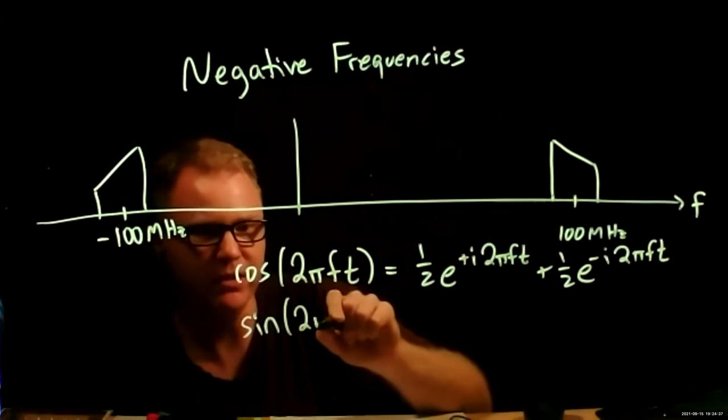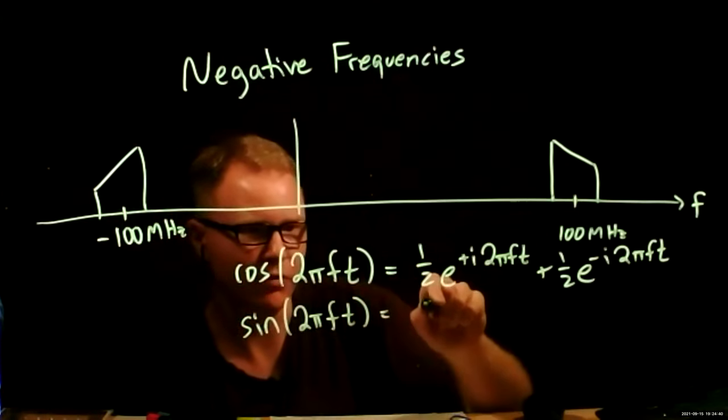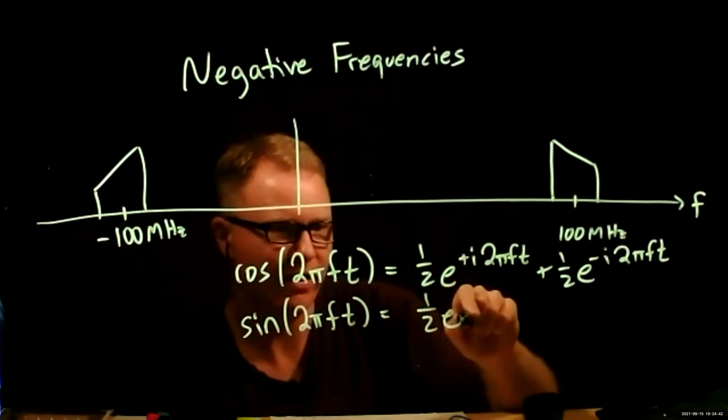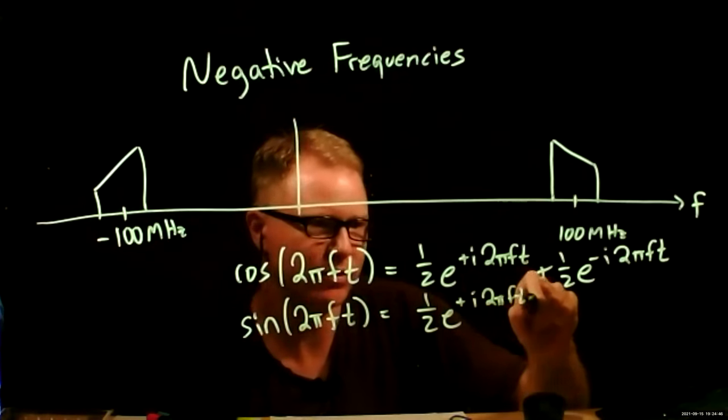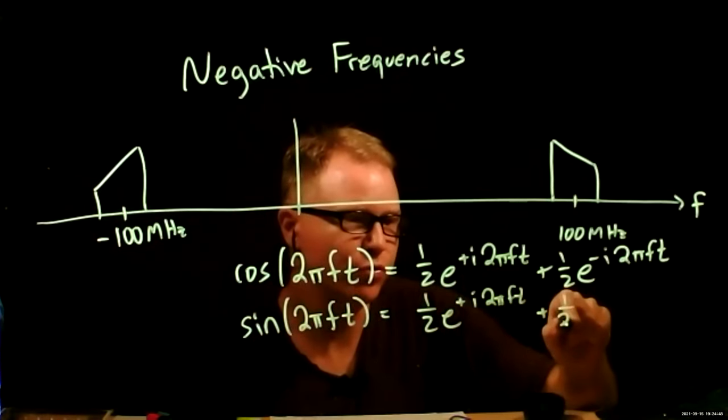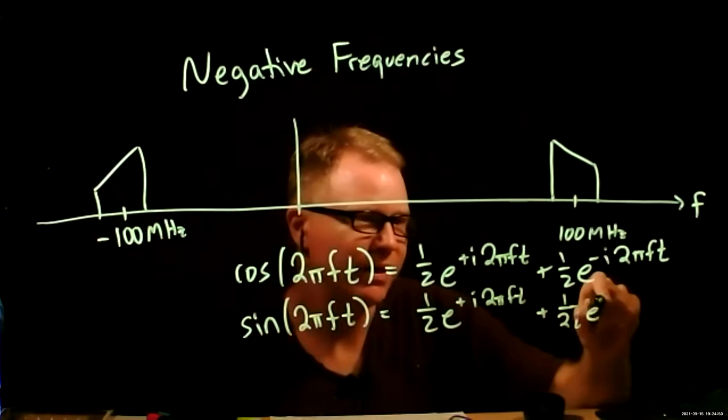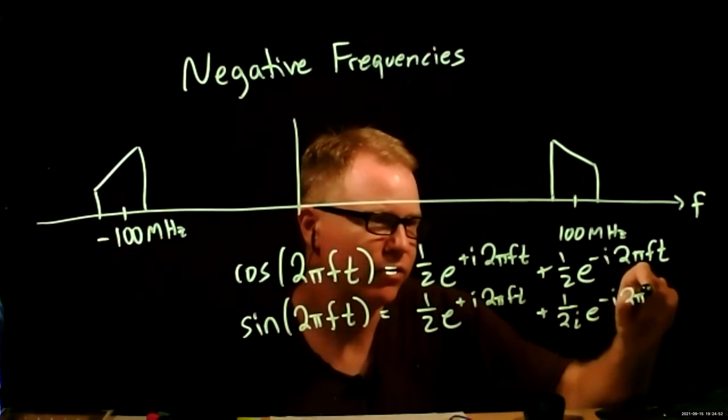And a real sine of 2 pi f t, you can also write this as 1 over half e to the plus i, so some amount of, honest to God, positive frequency, plus here it's over 2i, e to the minus i 2 pi f t.